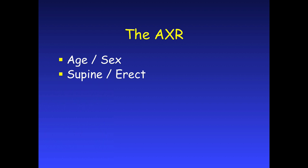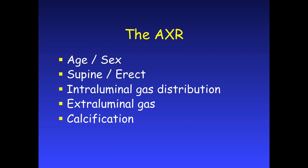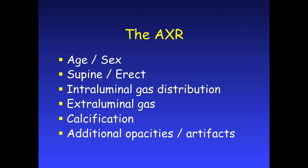For any abdominal or chest x-ray, we normally note the age and sex of the patient, then whether it's a supine or erect film, and then focus on the luminal and extra-luminal gas pattern. We also look at additional opacities such as calcification or artifacts, and finally soft tissues and bones, before summarizing the findings — normal and abnormal.